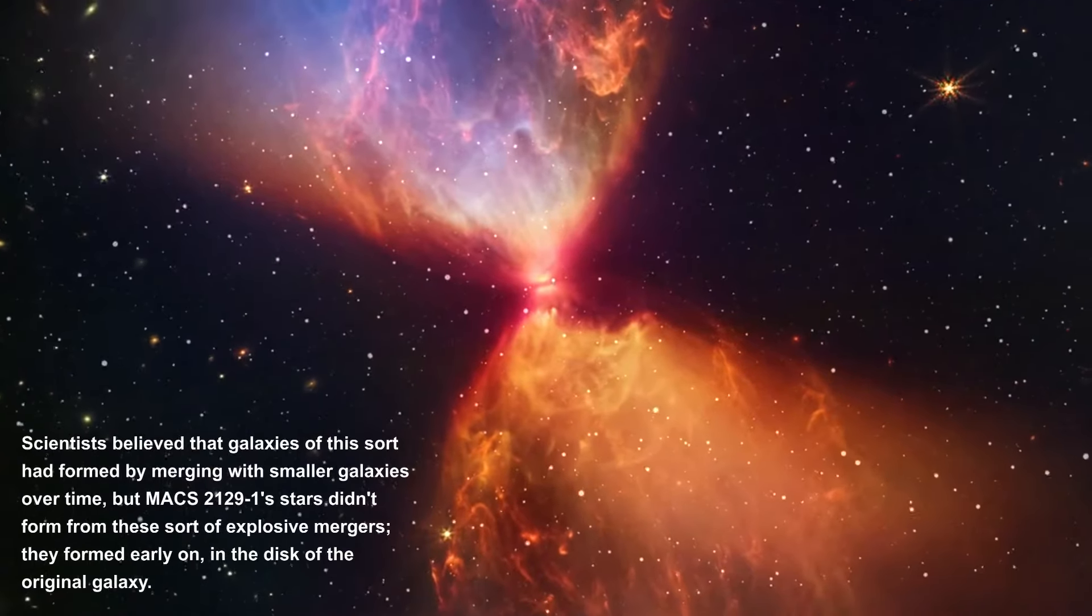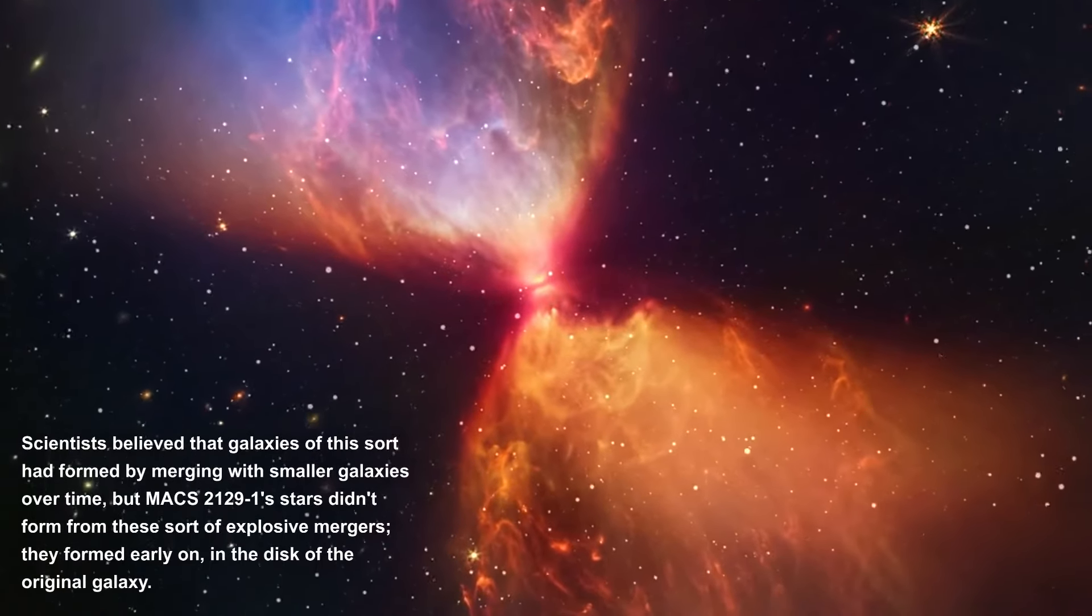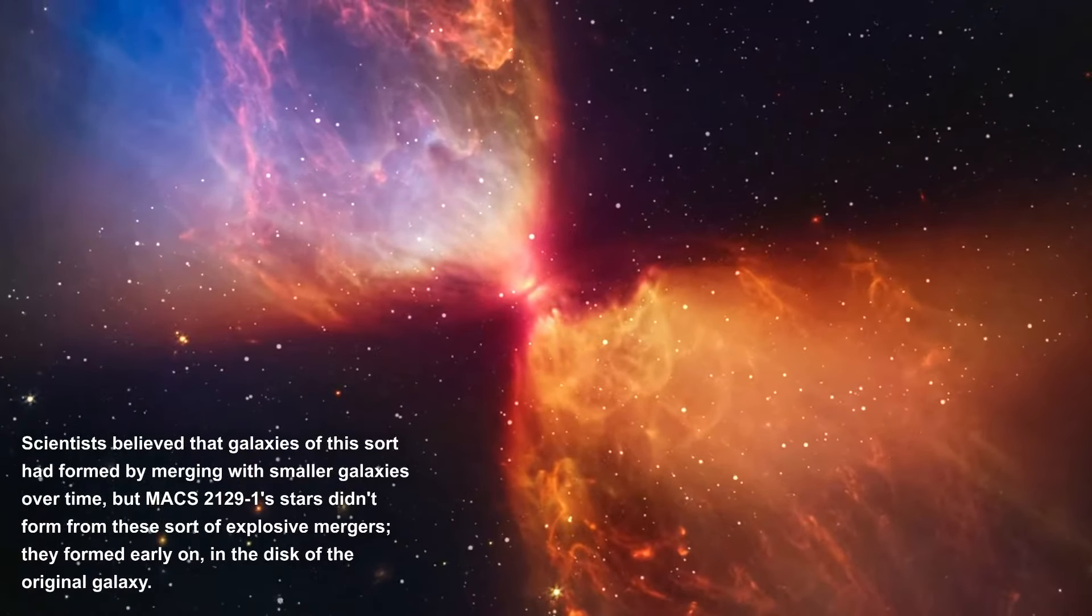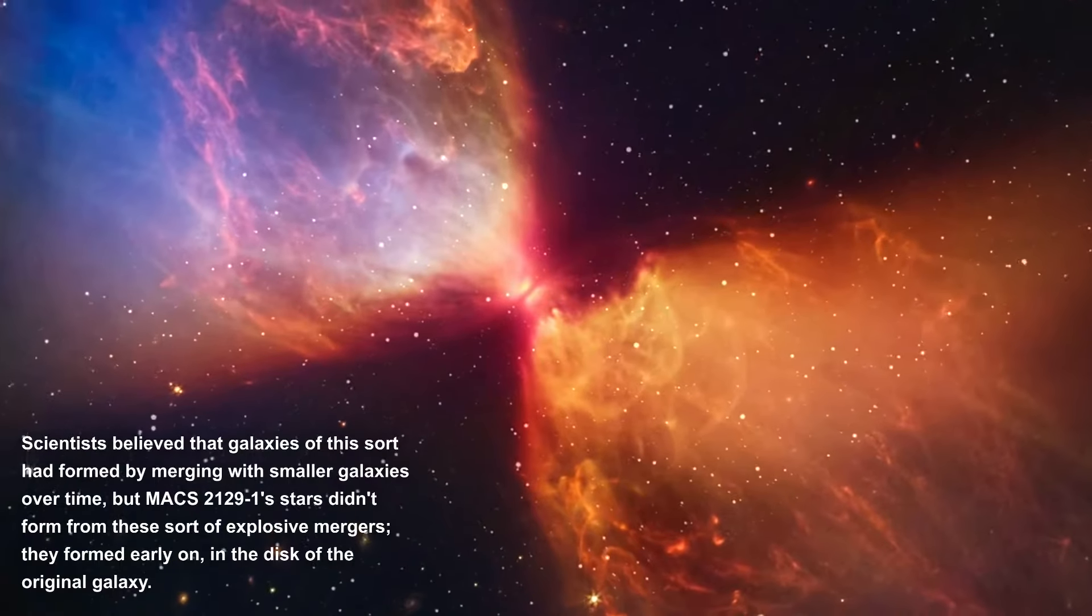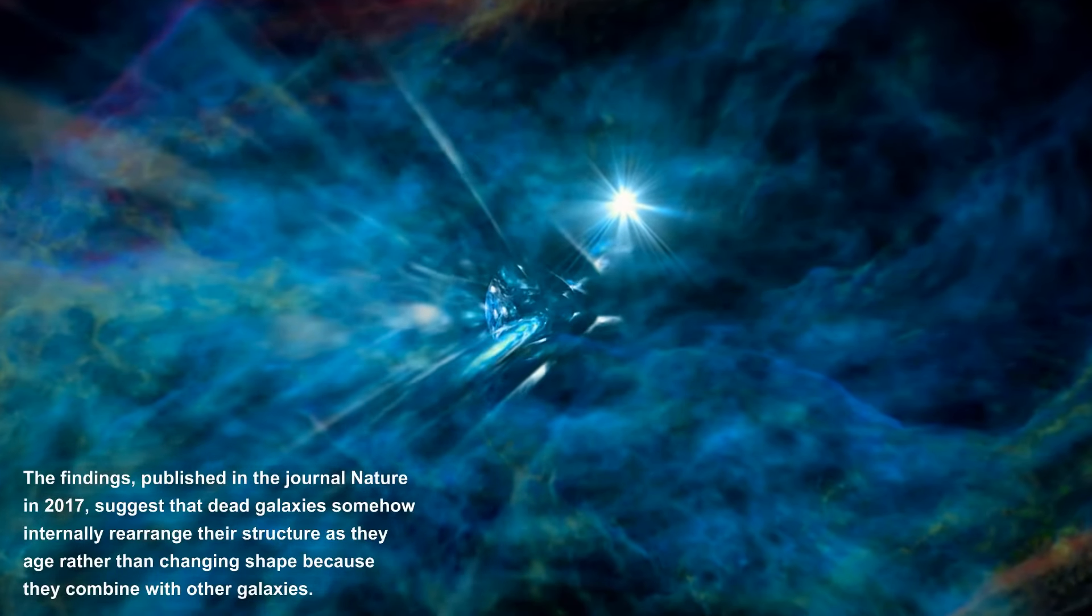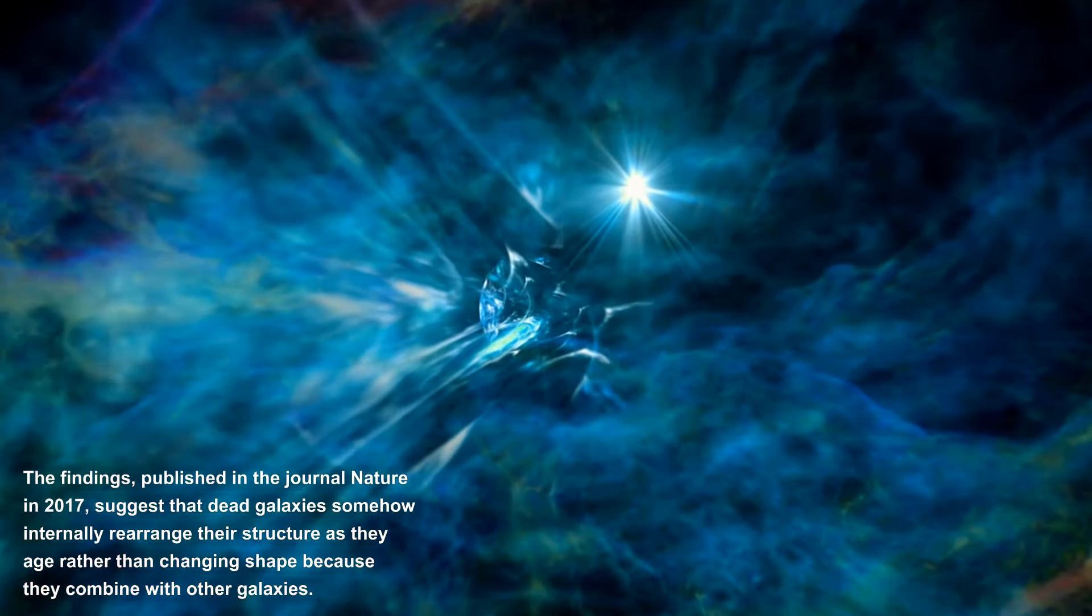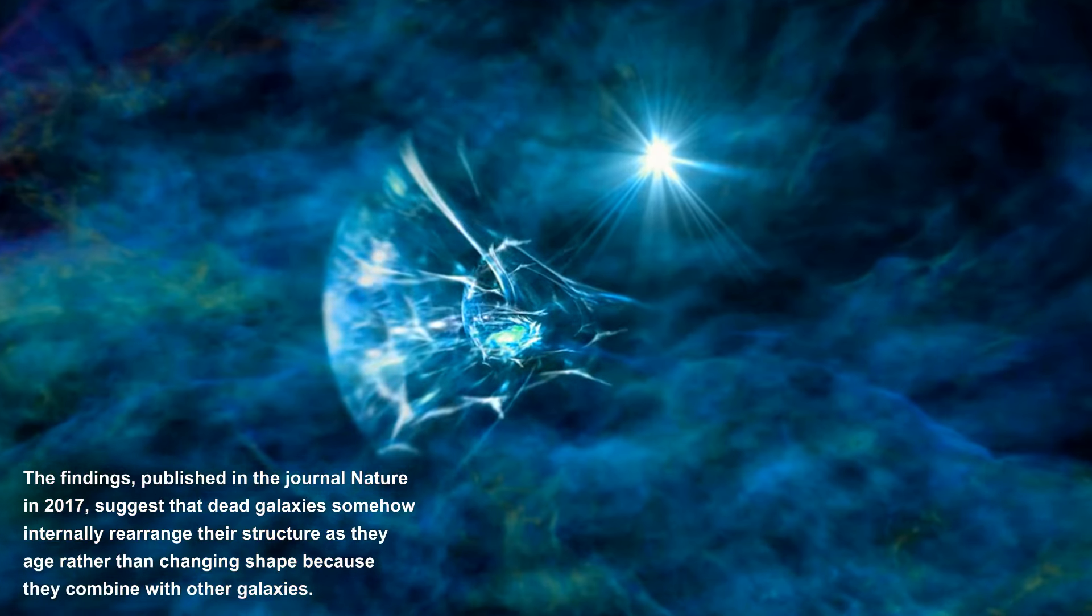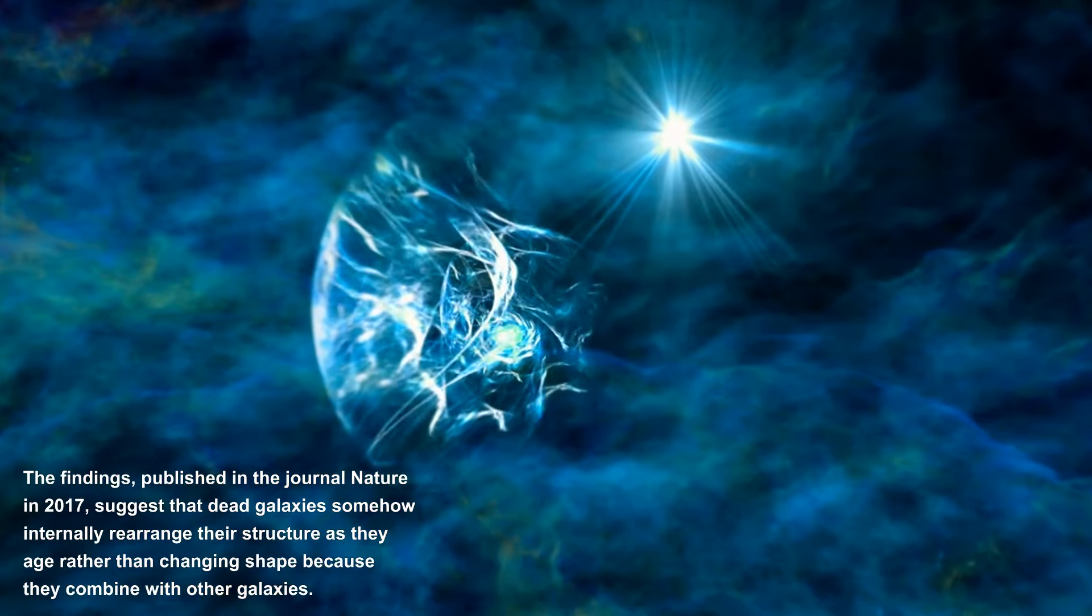Scientists believe that galaxies of this sort had formed by merging with smaller galaxies over time, but MACS 2129-1's stars didn't form from these sort of explosive mergers. They formed early on, in the disc of the original galaxy. The findings, published in the journal Nature in 2017, suggest that dead galaxies somehow internally rearrange their structure as they age, rather than changing shape because they combine with other galaxies.